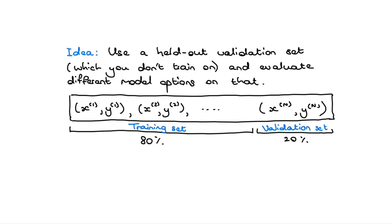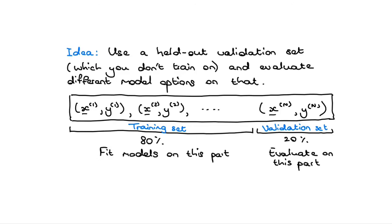Here's the idea: we're going to hold out a validation set that we don't train on, and then look at different model options on that validation set. If this is the whole dataset, we're going to split off 20% and call that the validation set, keeping the other 80% as training data. We fit the model on the 80% training data and evaluate on the 20% validation data.